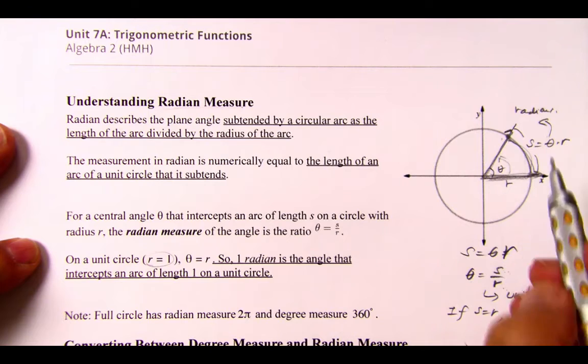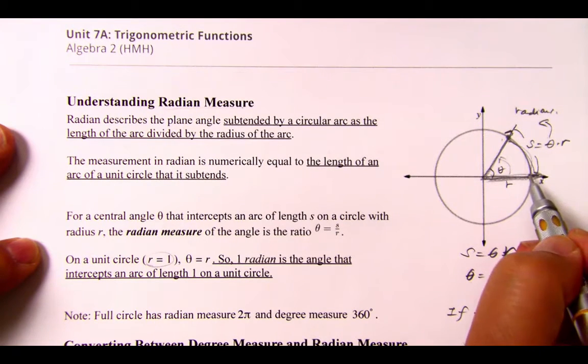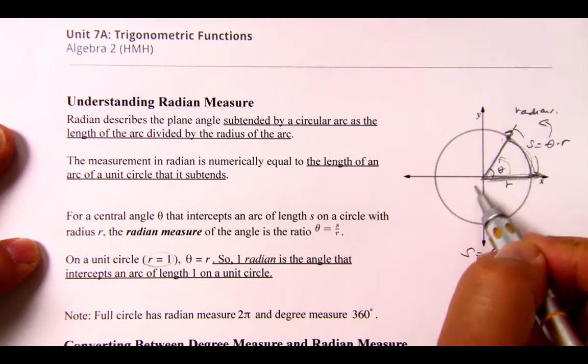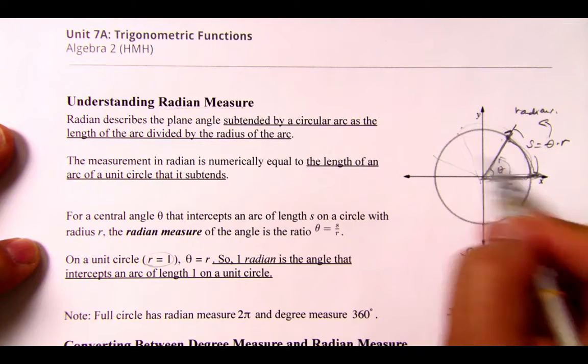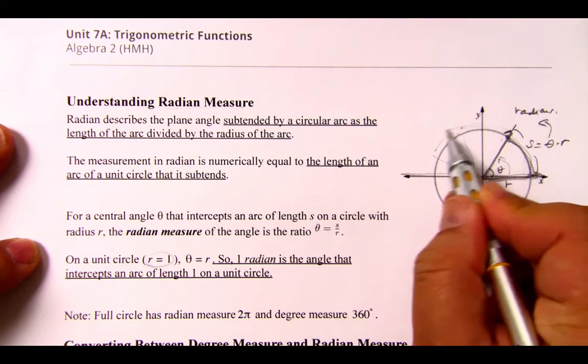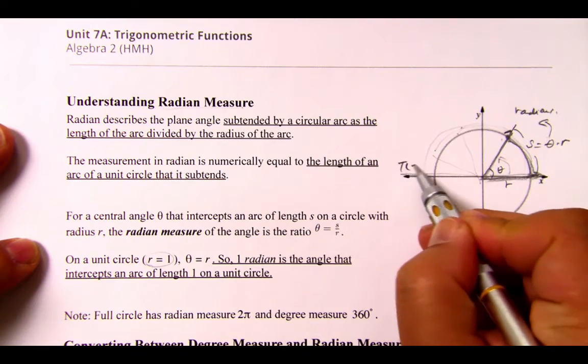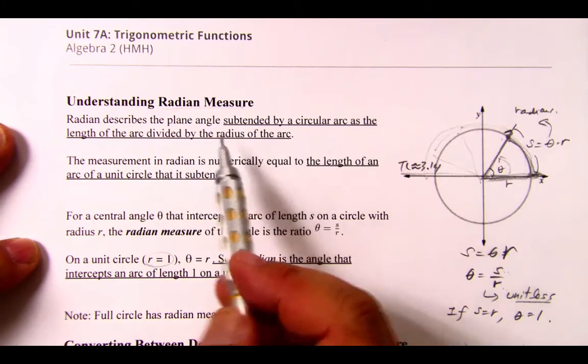So in a unit circle, the radian of one has an intercepted arc length of one. Two has two. If it's three, there's three. And this half a circle right here is pi. And pi is approximately 3.14.